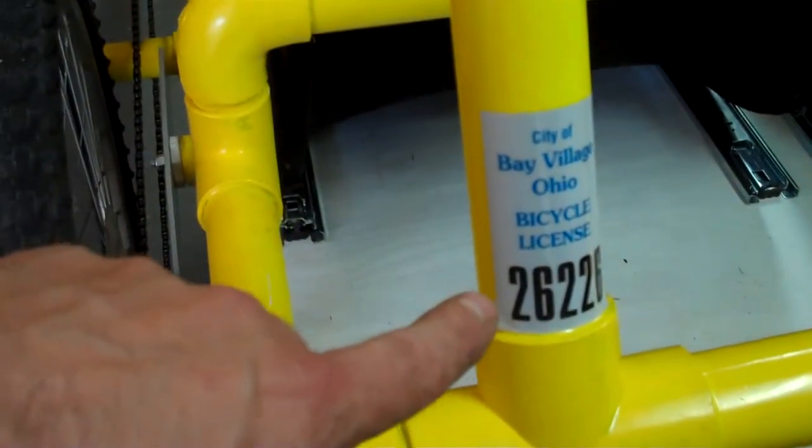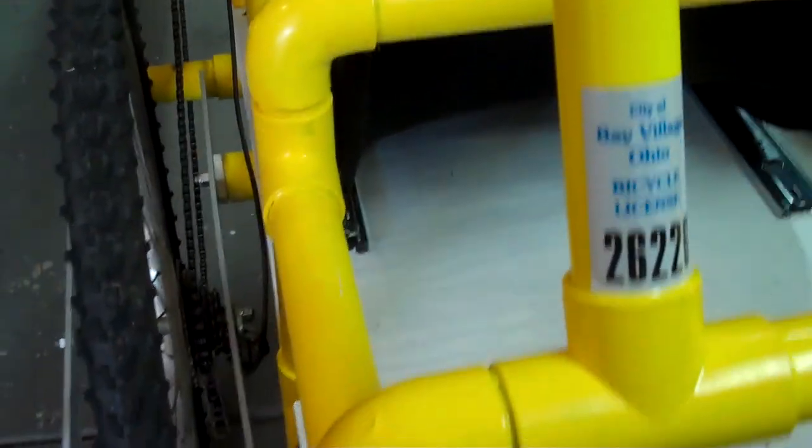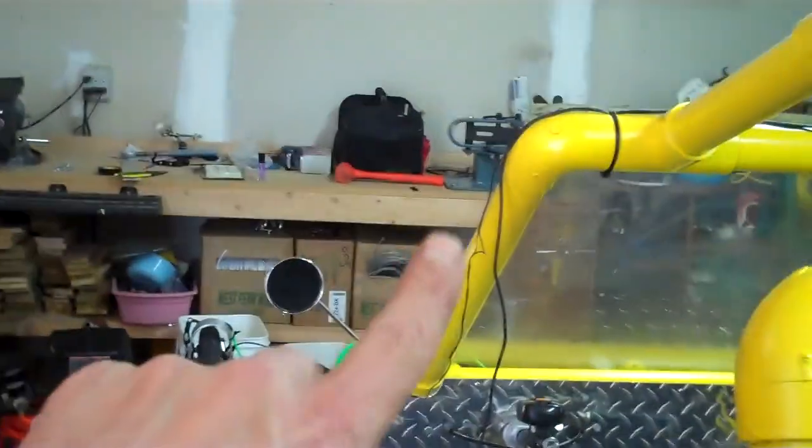We have the official bicycle license on the back in a visible area. Our tail lights are on, all set to go. We got our seats all adjustable and everything else. I'm going to finish dressing up these final wires here and then we will take our first spin.